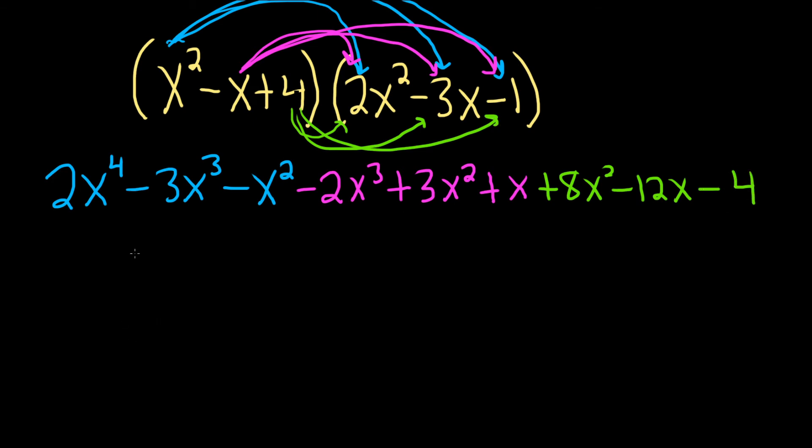Let's clean this up. We have 2x to the 4th. What about x cubed terms? We have this one and this one - that gives us minus 5x cubed. What about x squared terms? We have this one, this one, and this one. 11x squared minus x squared is 10x squared. I'm going to cross them out so I don't get mixed up.